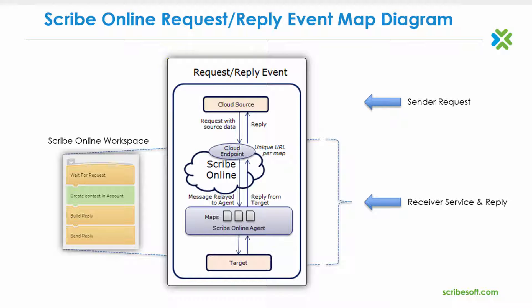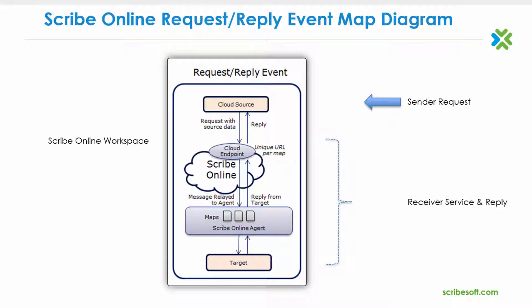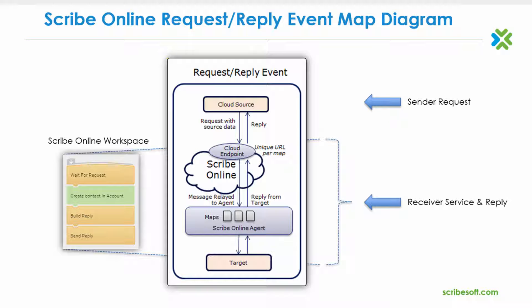For example, assume your custom application manages leads, and you want any new lead to be integrated with existing accounts in your disparate CRM system. With the custom leads application configured to auto-generate a properly formatted API request containing the lead data for integration to a ScribeOnline defined URL endpoint, the request-reply map will receive and integrate the sent payload into the target CRM system.